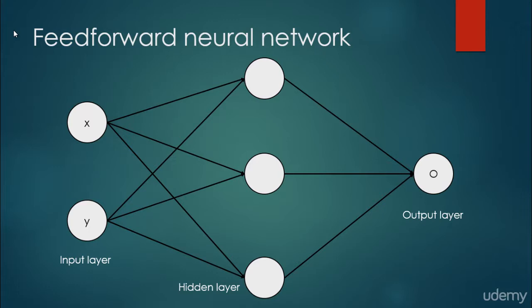So, in a feedforward neural network, as you can see, we have directed edges, and we have an input layer, we have an output layer, and between the two of them, there are a hidden layer.